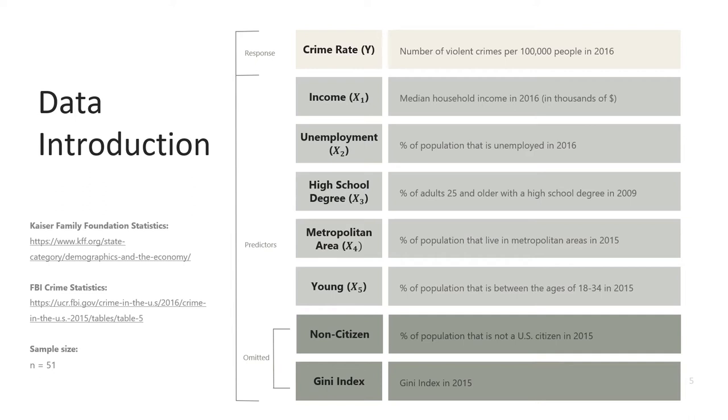The five exploratory variables we're going to use are all continuous and they are income, which is the median household income in dollars, unemployment, which is the percent of the population that is unemployed, high school degree, which is the percent of adults 25 and older with a high school degree, metropolitan area, which is the percent of the population that lives in metropolitan areas, and young, which is the percent of the population that is between the ages of 18 to 34.